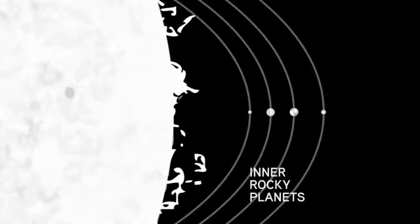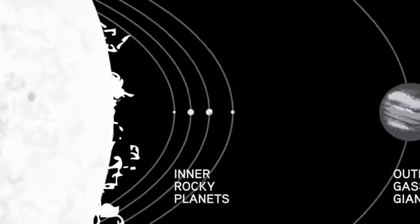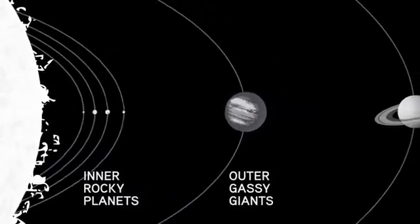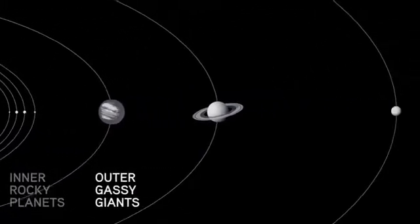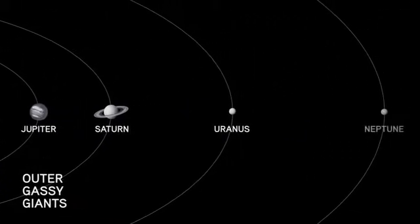Let's look at the outer gassy planets and how they were formed. The intense heat of the young Sun drove away gassy materials from the inner parts of the solar system — above all, a lot of hydrogen and helium — leaving that region deprived of those gases. All that gassy material gathered further out and eventually condensed to form the gassy giants: Jupiter, Saturn, Uranus, and Neptune.